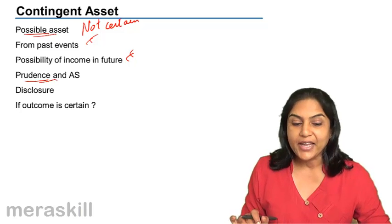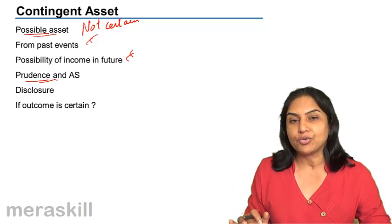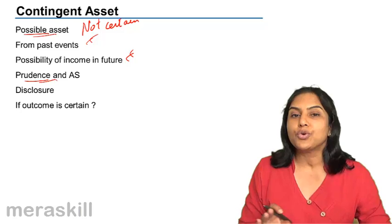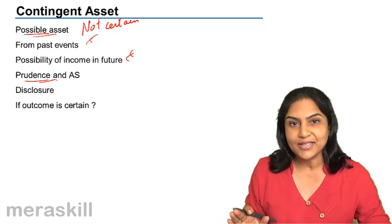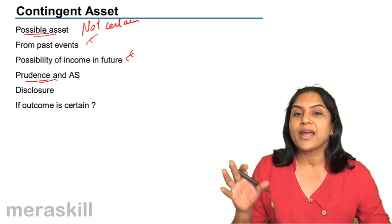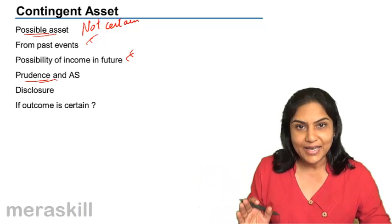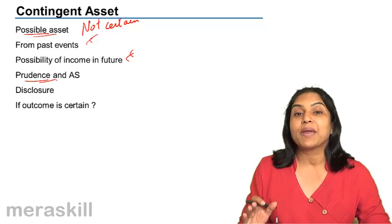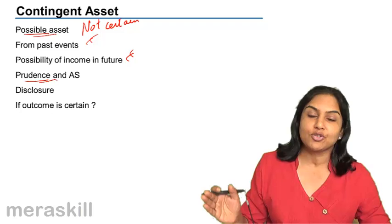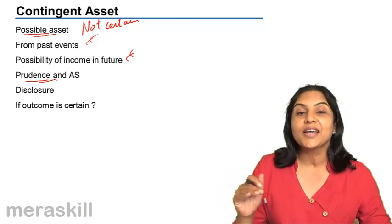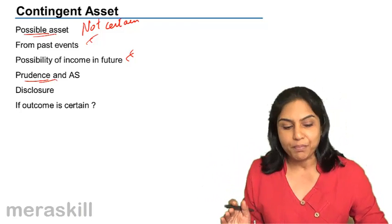So we are prudent, and if we expect an asset to come in future, we do not disclose it in any way. We do not recognize it as an asset nor any economic benefit as an income till it becomes a certainty. Once it becomes a certainty, it is no longer a contingent asset, it is a proper asset.